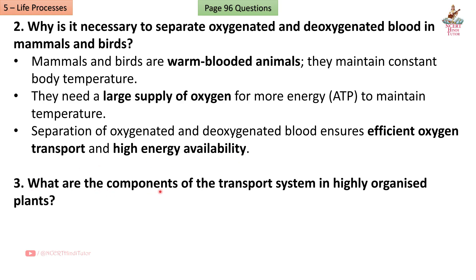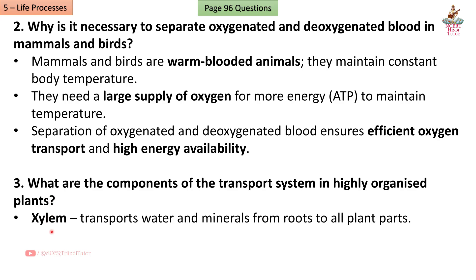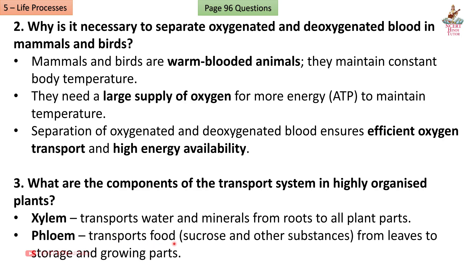Question 3: What are the components of the transport system in highly organized plants? Answer: Xylem transports water and minerals from roots to all plant parts. Phloem transports food (sucrose and other substances) from leaves to storage and growing parts.